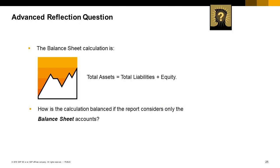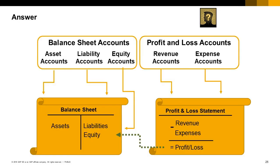Here is a question for those with accounting backgrounds. The balance sheet calculation is: total assets equals total liabilities plus equity. How is the calculation balanced if the report considers only balance sheet accounts? The profit or loss accumulator is included in the balance sheet report and will either increase or decrease the equity on the balance sheet.